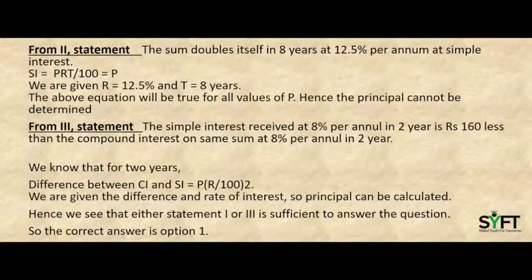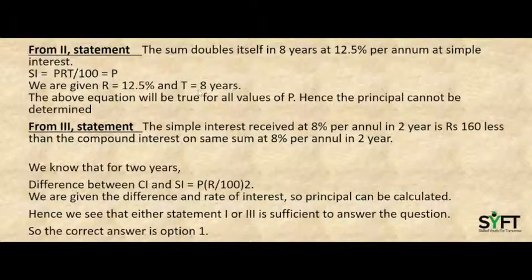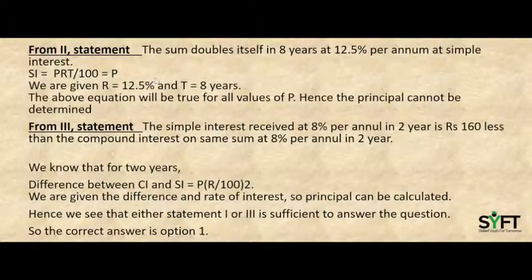From Statement 2, the sum doubles itself in 8 years at 12.5% per annum at simple interest. The formula for simple interest is P × R × T / 100 = P. Here R is 12.5% and T is 8 years, but the amount of simple interest is not given in the statement. So the equation will be true for all values of P. Hence, the principal cannot be determined from this statement.